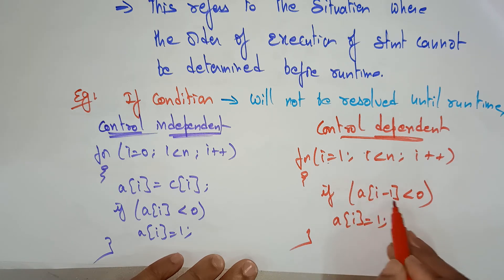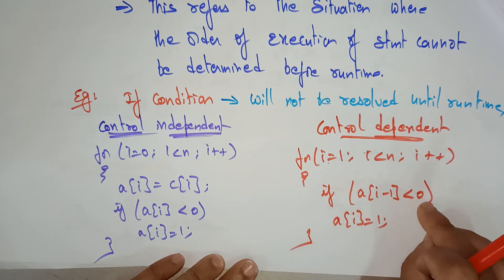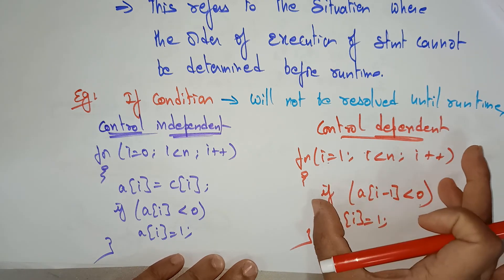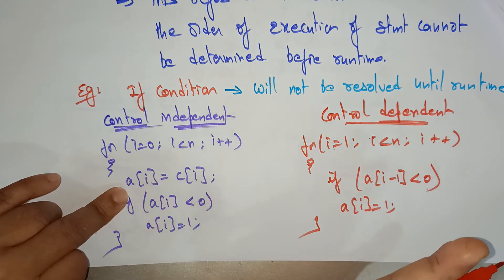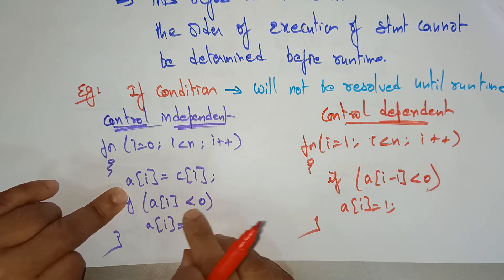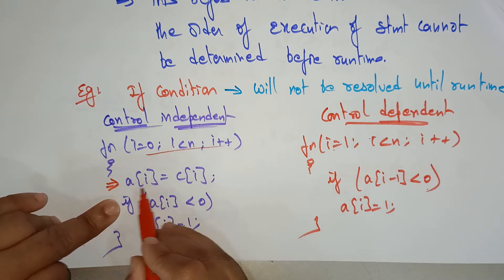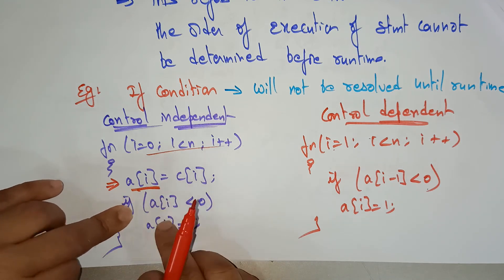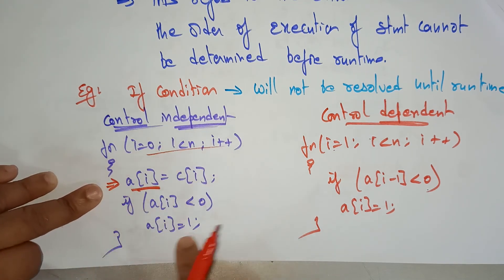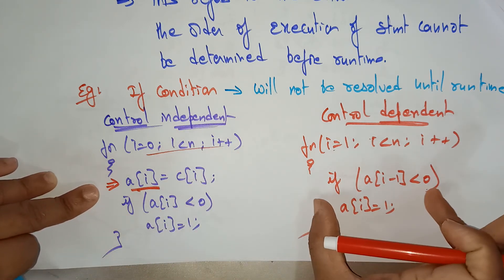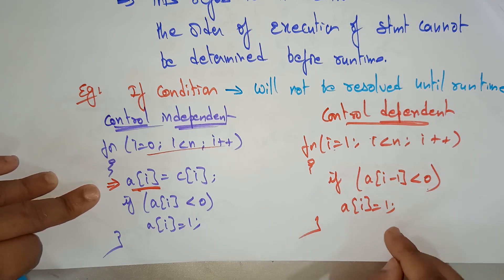Whenever i = 1, then i minus 1 is 0, so a[0] is less than 0. Whatever value is there, 1 minus 1 gives 0, so it is less than 0, and then you have to assign 1 — this is control dependent. In the control independent case, we are simply moving c[i] to a[i] before checking the if condition. That statement tries to execute regardless — it does not matter whether the if condition is true or not. A[i] occupies the value of c[i] independent of the condition. But in the control dependent case, the control is completely dependent: whenever the condition is true, it checks and assigns the value to a[i].